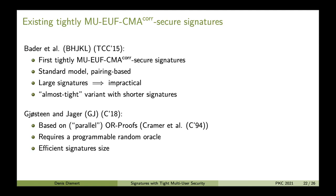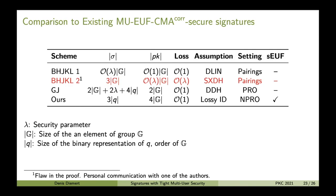To give some numbers: the TCC 2015 construction has signatures that are linear in the security parameter many group elements, but constant-size keys and constant security loss. The Gjøsteen-Jager construction has much shorter signatures, very short public keys of only two group elements, but requires a programmable random oracle. In our scheme, we were able to reduce the signature size to only three Zq elements. We have slightly larger keys than the Gjøsteen-Jager construction, but we have strong unforgeability and we don't require a programmable random oracle.